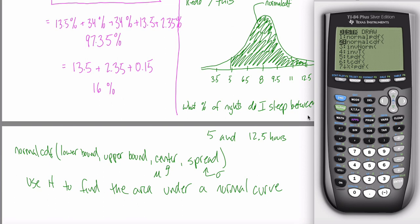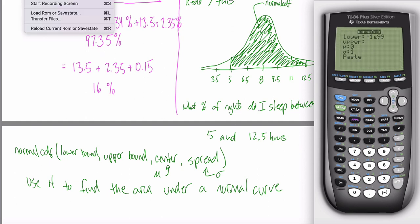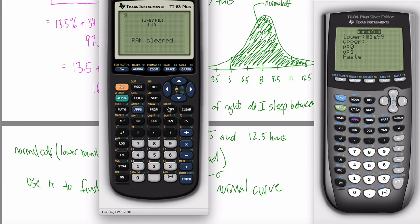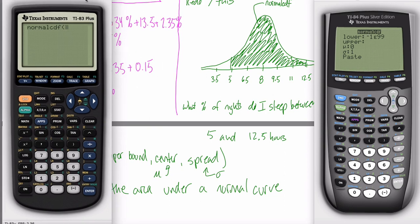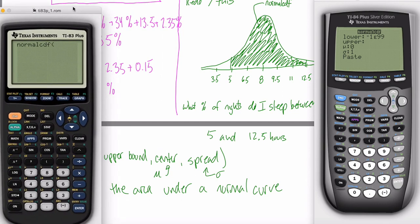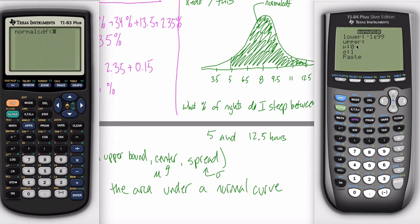When you hit enter on normal CDF, one of two things will happen. If you have a newer calculator with more recent software, you'll see a screen with prompts. If you have an older one, it'll just wait for you to type the four arguments with commas. The newer version prompts you: lower means lower bound, upper means upper bound, then it asks for mu — which right now is your center — and sigma, which is your spread. Think of it as lower, upper, center, spread.